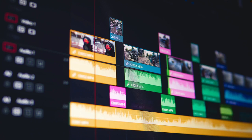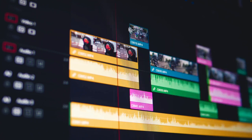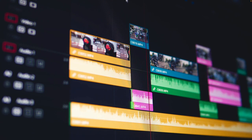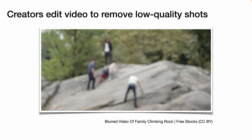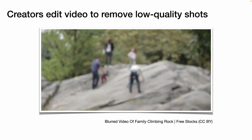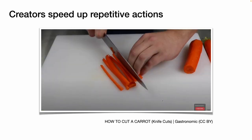To make an engaging video, we edit the video footage to remove unnecessary or low-quality shots. For instance, creators edit their video to remove blurry footage or remove long pauses in their speech, and speed up repetitive actions.